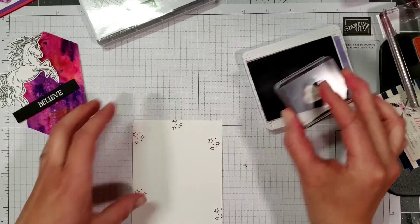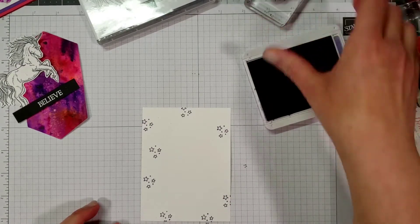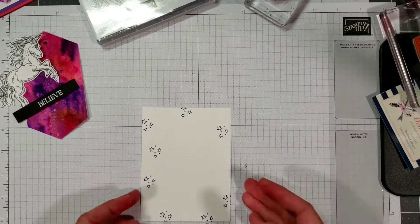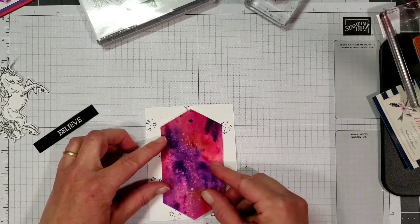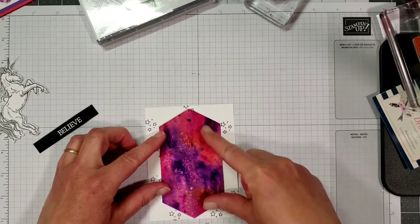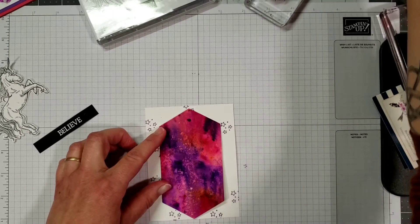I'm going to take our pigment sprinkles piece and we're going to adhere it right down the middle with our snail adhesive here.